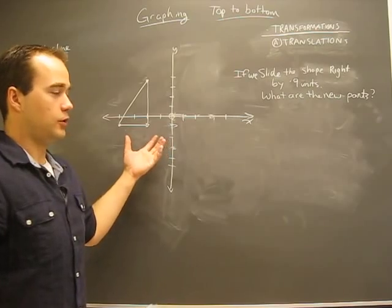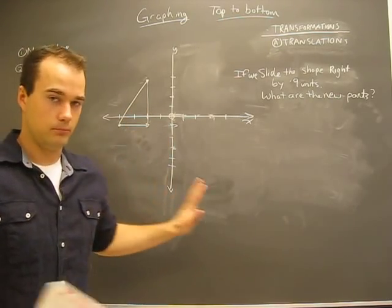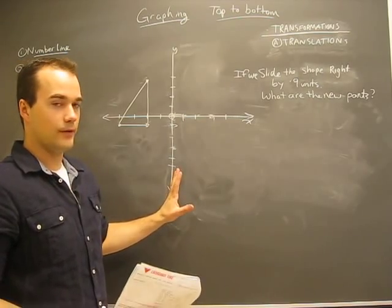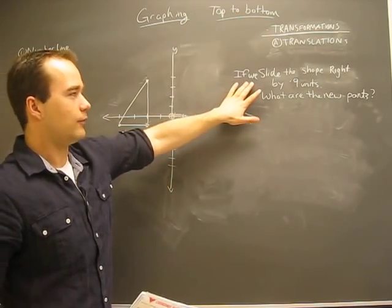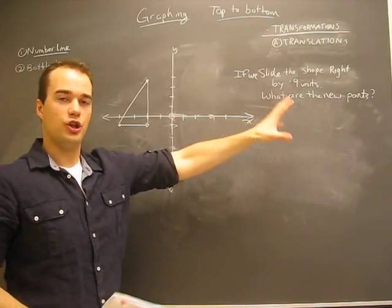So here's the situation. We're given a shape on a graph. Nothing to be scared of yet, we know everything going on. It's saying if we slide the shape to the right by nine units, what are the new points?